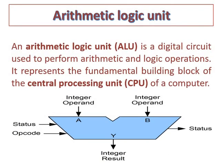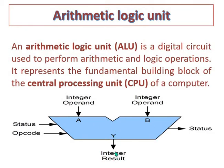The arithmetic logic unit is a digital circuit used to perform arithmetic and logical operations. It represents the fundamental building block of the central processing unit. Each instruction is divided into two parts: opcode and operand. The opcode tells what operation to perform — for example, addition — and comes to the ALU, while the operands, say 5 and 7, are the inputs. So 5 plus 7 gives a result stored in the output register Y, with status tracked by status registers.